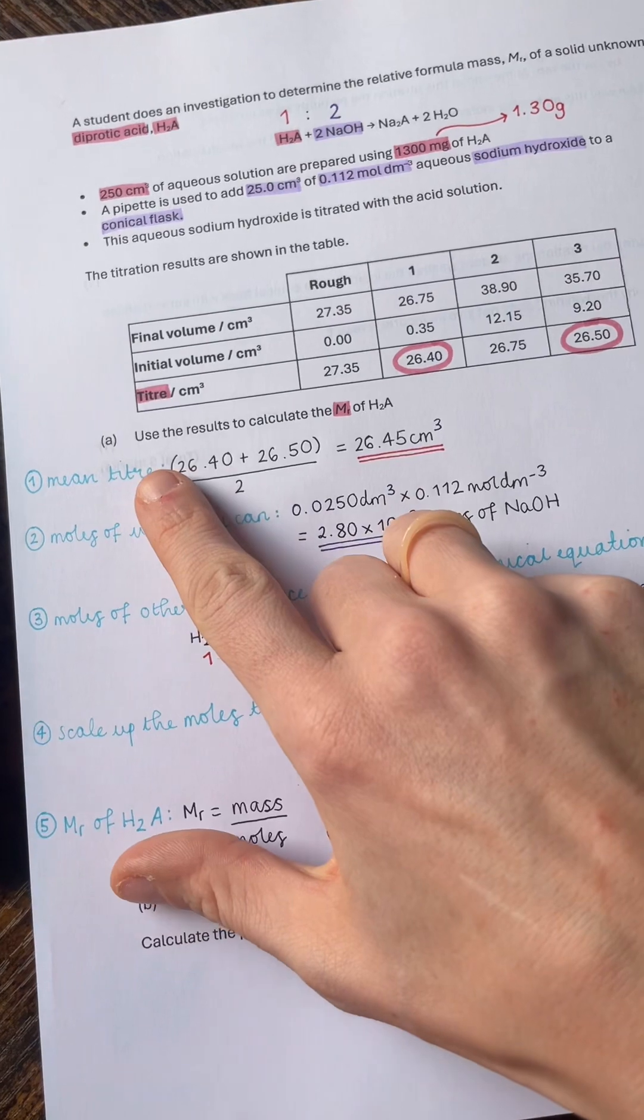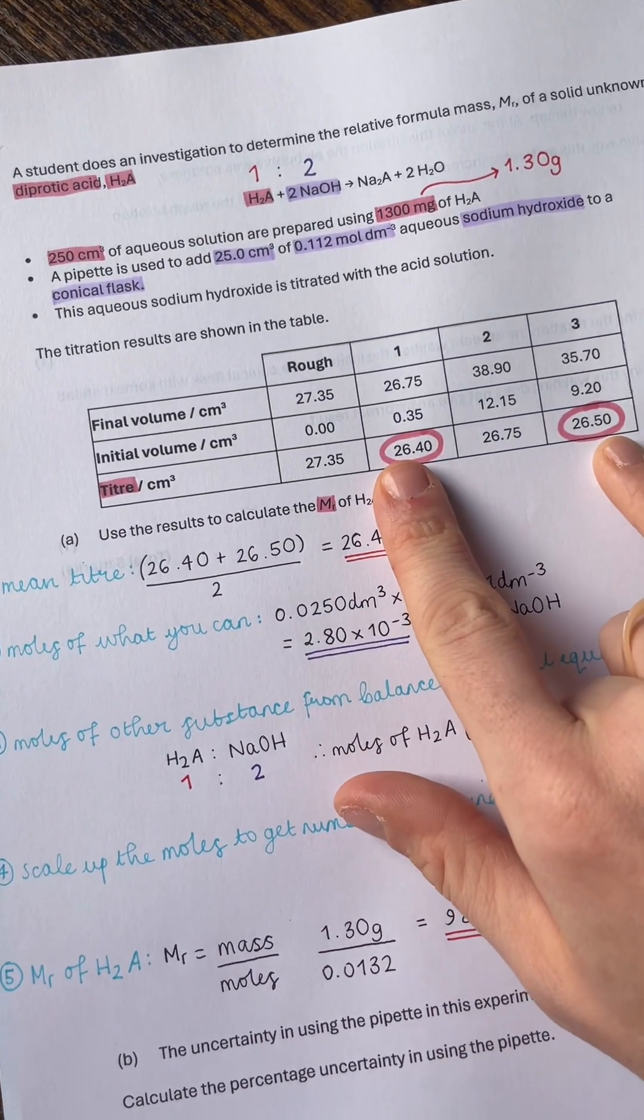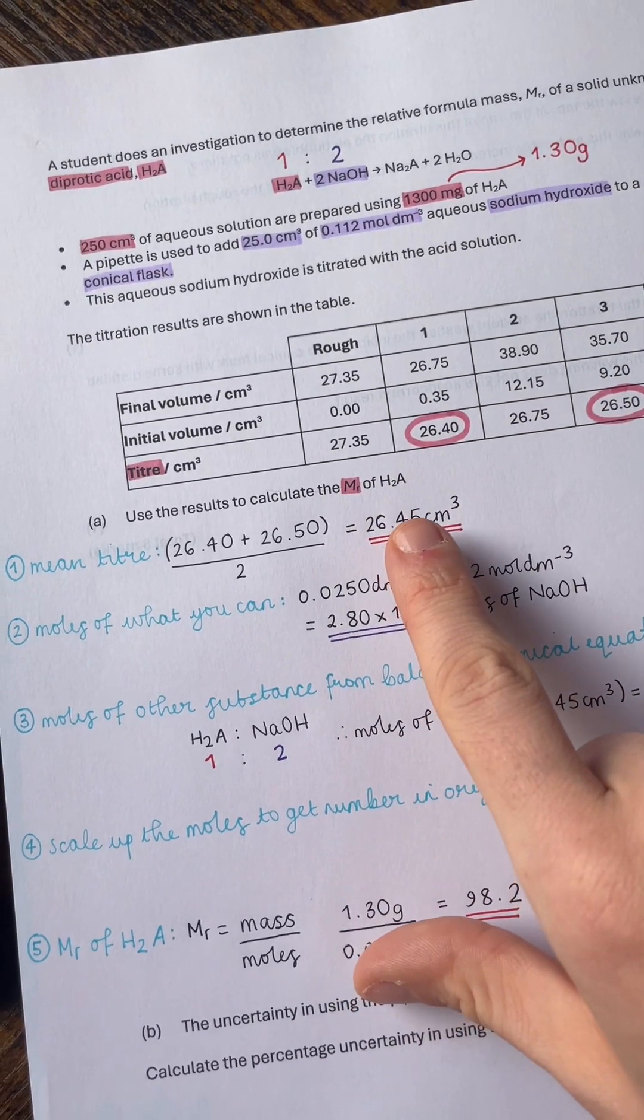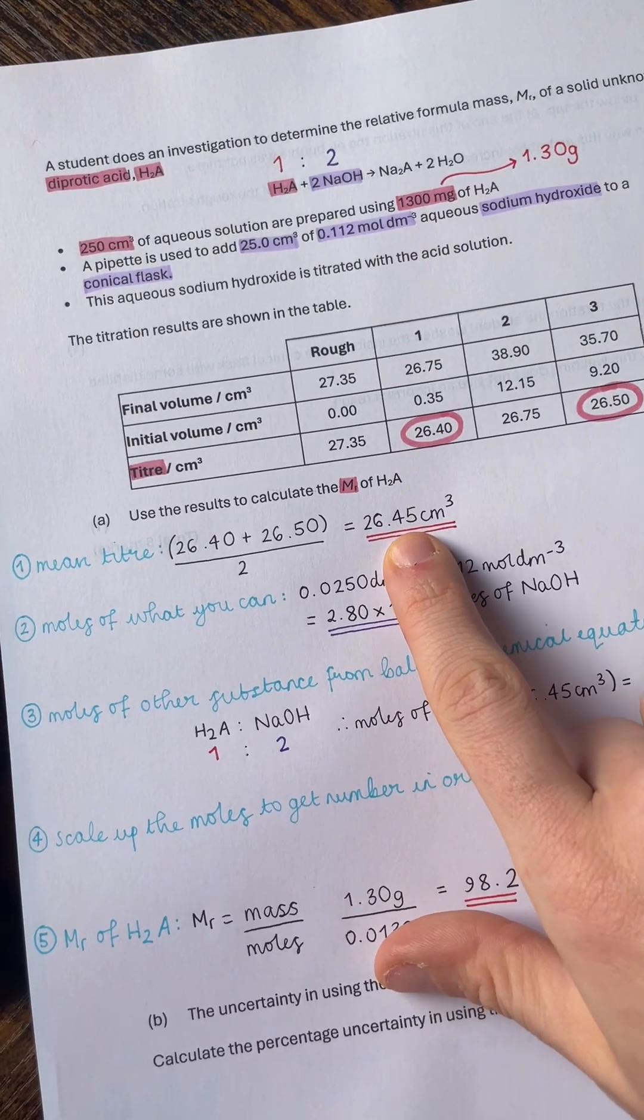First step is to get the mean titer. So only using our concordant results, and we should never include the rough even if that is concordant, we get a mean titer of 26.45 cm³, and that is for the H2A solution.